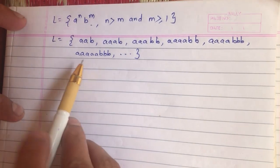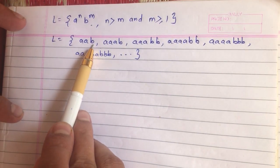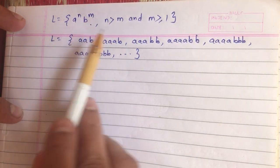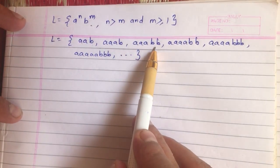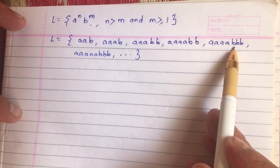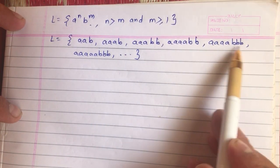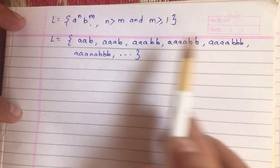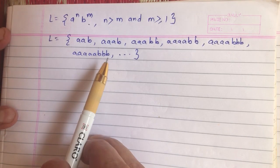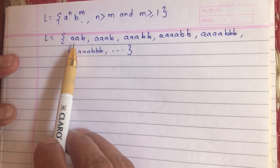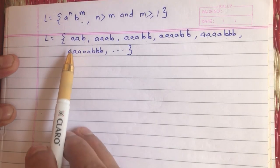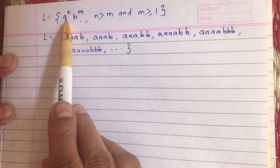So these kinds of strings will be in our language: when m equals one, n will be two, three, four and so on; when m equals two, n is three, four and so on; when m equals three, n is four, five and so on. What we understand here is that the number of a's must always be more than the number of b's.